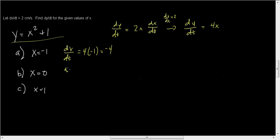dy/dt here is equal to 4 times 0, which is 0. And dy/dt here is equal to 4 times 1, which is 4. So not bad.